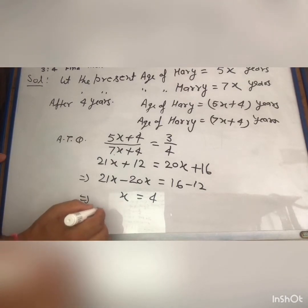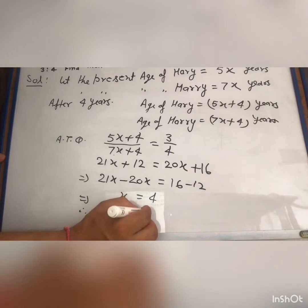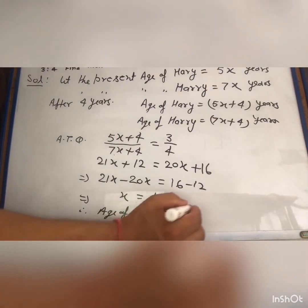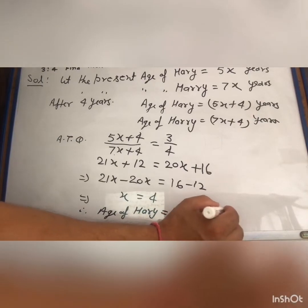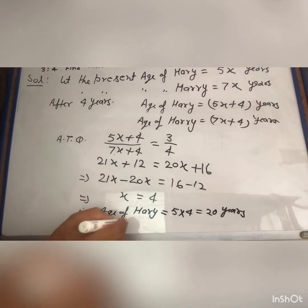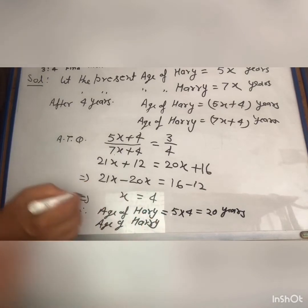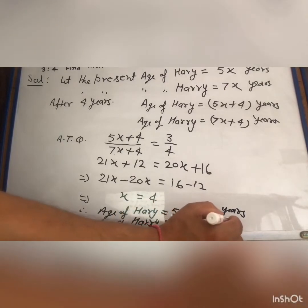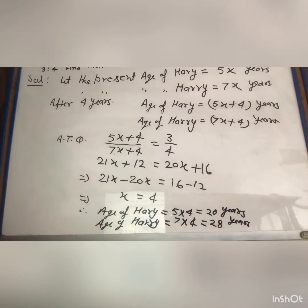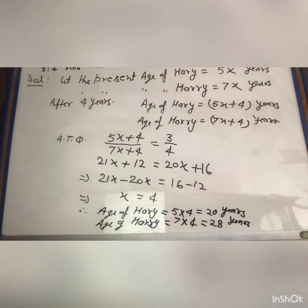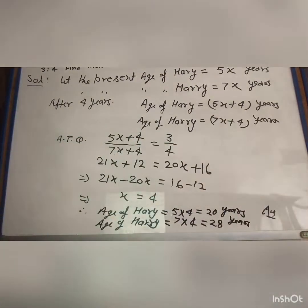Therefore, the present age of Hari equals 5x, that is 5 into 4, which is 20 years. And the present age of Harry equals 7x, that is 7 into 4, which is 28 years. You can verify: 20 by 28 gives the same ratio 5 to 7. So this is your final answer.